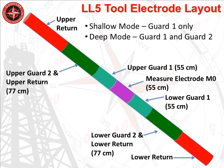This slide shows how shallow and deep reading lateral log measurements are implemented into a single tool using a drill collar with insulating gaps. This embodiment uses six insulating gaps creating five isolated electrode sections, hence the designation LL5. The measure electrode M0 in the center is about 22 inches long. Immediately on each side of M0 are the upper and lower short guards, labeled upper guard 1 and lower guard 1, also about 22 inches long. The next pair are the outer guard electrodes, upper and lower guard 2, about 30 inches long. Beyond those are the upper and lower collar returns.